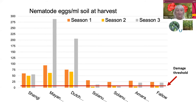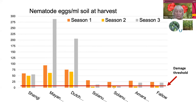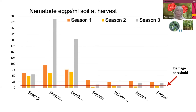Three potato varieties — Shangi, Mayan, and Dutch — were grown over three seasons. We see the nematode population staying the same or going sky high, way above the threshold level, which is that red line. Whereas the next two, nightshade varieties which are resistant hosts, suppress the population, as does amaranth, which is a non-host, and fallow. This demonstrates that crop rotation can work.